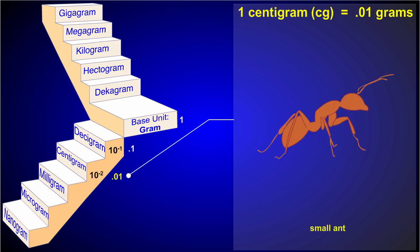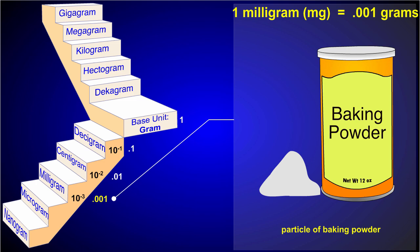Centigrams are 100 times smaller than grams. A small ant weighs about a centigram. Milligrams are 1000 times smaller than grams. A particle of baking powder weighs about a milligram.